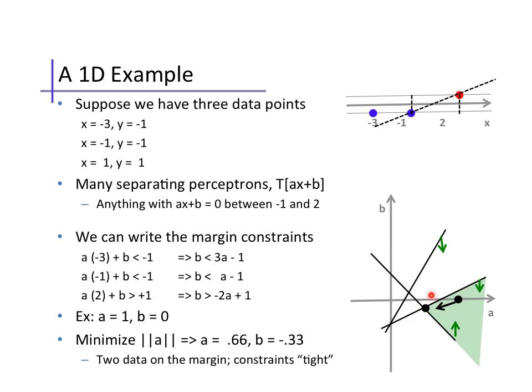Notice that two constraints, here and here, are tight, in the sense that our parameters lie on the constraint. This means that our solution would change if those constraints were not present. These are exactly the constraints due to points that lie on the margin. For example, if the negative example here were not present, the solution would change to widen the margin.